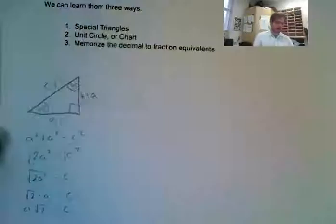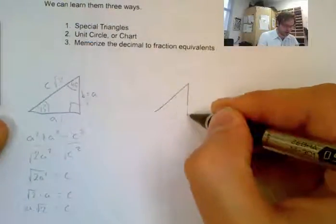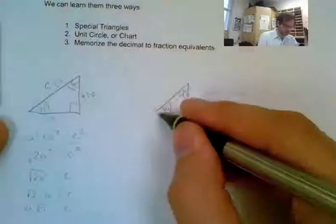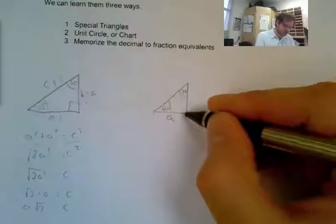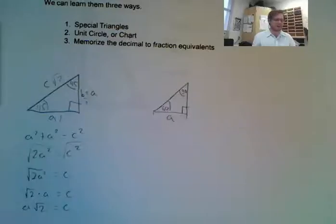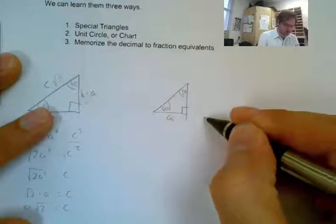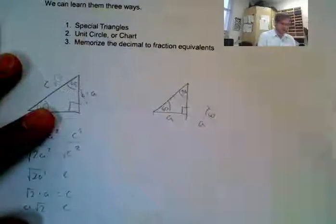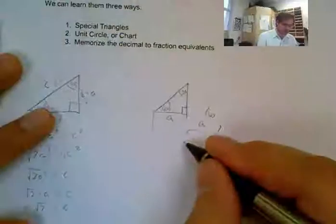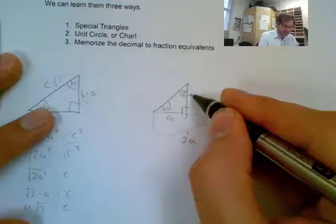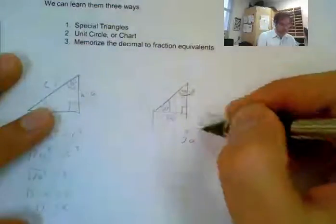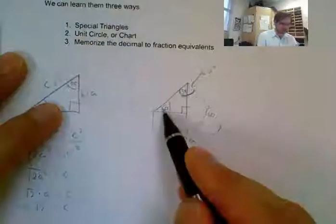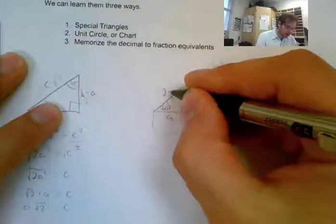Now let's look at when we have a 60 and 30. I'm going to say this angle is 60, and this angle is 30. I'll call the base distance A. In order to solve this, I'm going to make an equilateral triangle — I extend this and flip it to make a mirror image. So this value on the other side is also A, making the total base distance 2A. The whole top angle is 60 degrees, giving us an equilateral triangle: 60, 60, 60. That means all sides must be equal, so my hypotenuse is 2A.